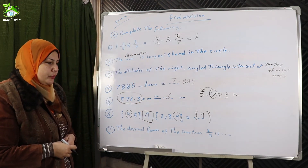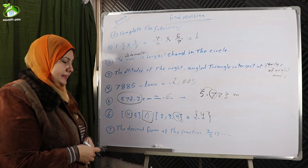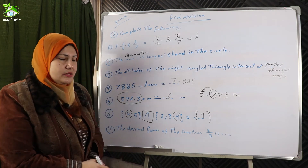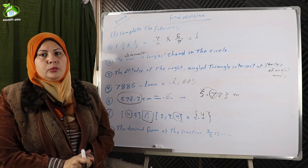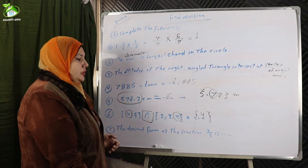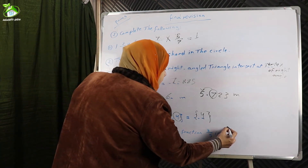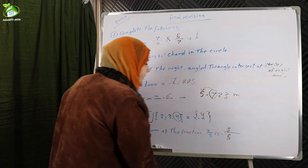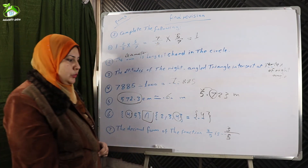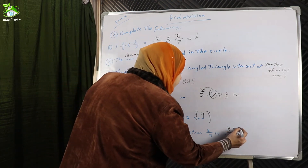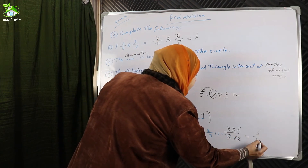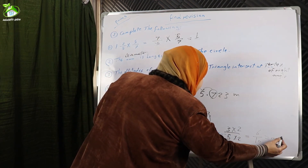Number seven: the decimal form of the fraction three-fifths. To convert any fraction to decimal, the denominator must be ten or a hundred or one thousand. To make five into ten, we multiply by two. We multiply both numerator and denominator by two: three times two over five times two equals six over ten, which equals 0.6.